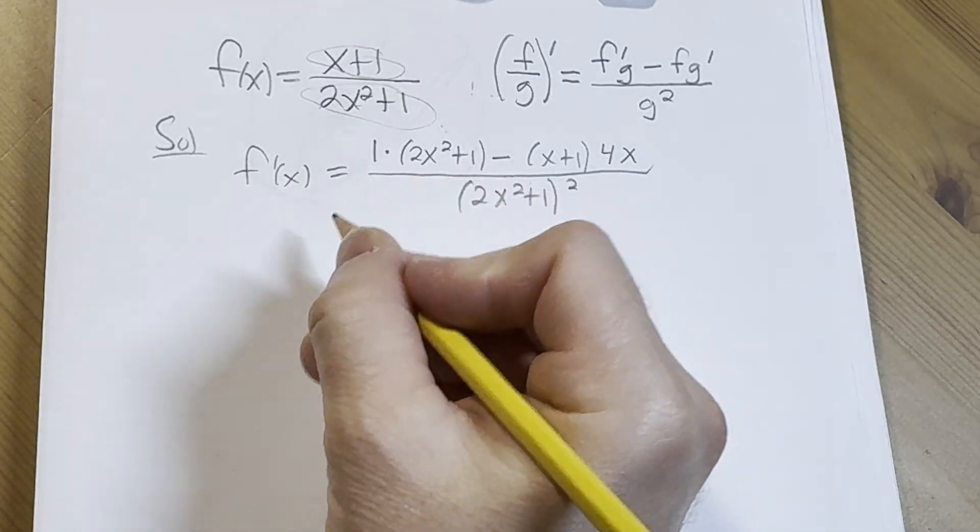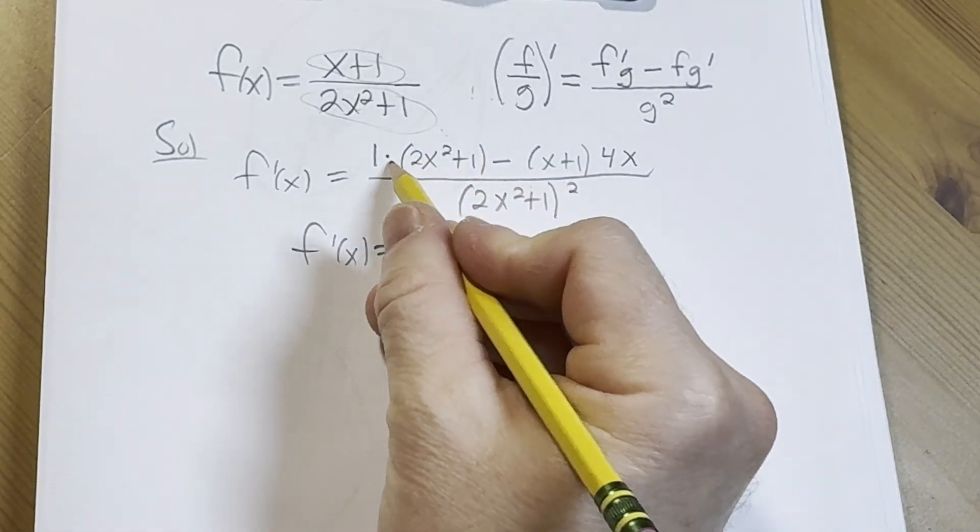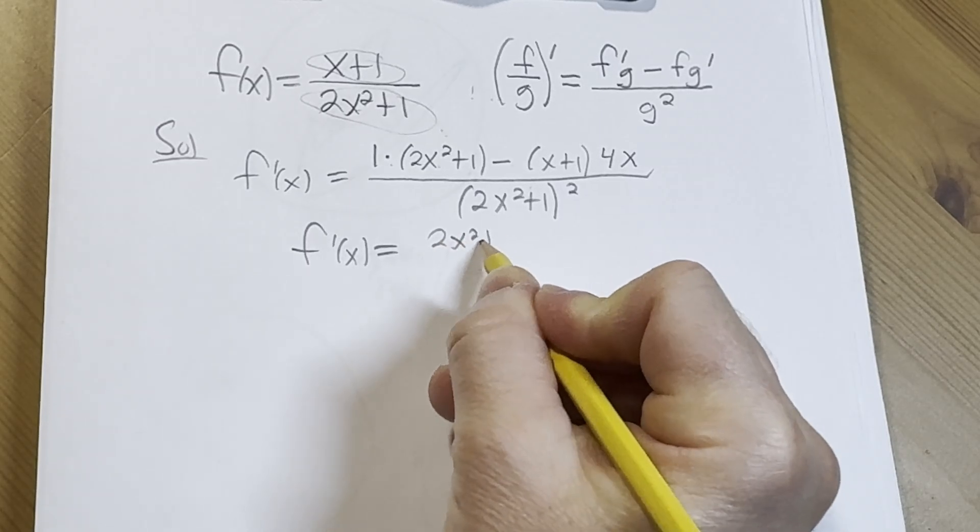Going pretty fast here. So f prime of x: 1 times this is just 2x² + 1.